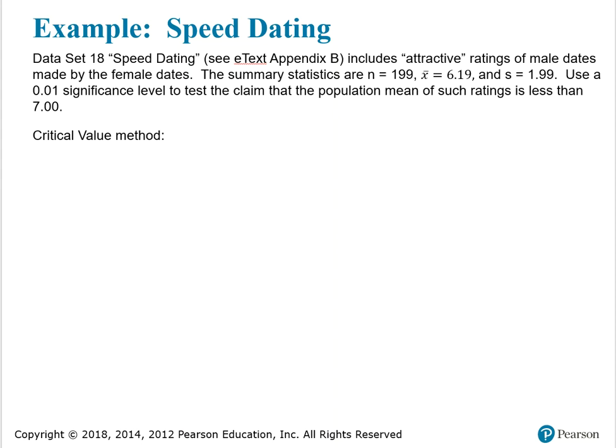Data Set 18 Speed Dating, which is in the e-text Appendix B, includes attractive ratings of male dates made by the female dates. The summary statistics are n equals 199, x bar is 6.19, and s equals 1.99. Use a 0.01 significance level to test the claim that the population mean of such ratings is less than 7.00.